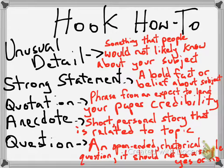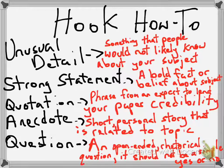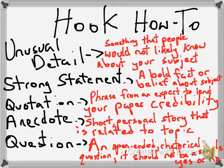Let's look at some ways to use a hook statement. For your beginning sentence, you have a few options: unusual detail, strong statement, quotation, anecdote, or question. Unusual detail and strong statement are going to require you to know information about your topic before you get started. An unusual detail is something people would not likely know about your subject — something strange that sticks in their brain and forces them to keep reading.